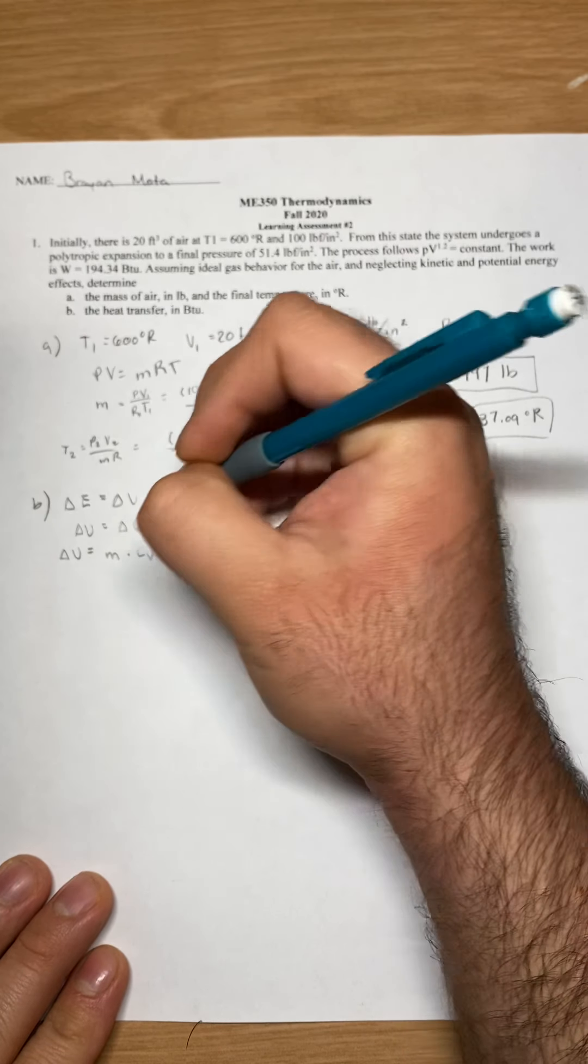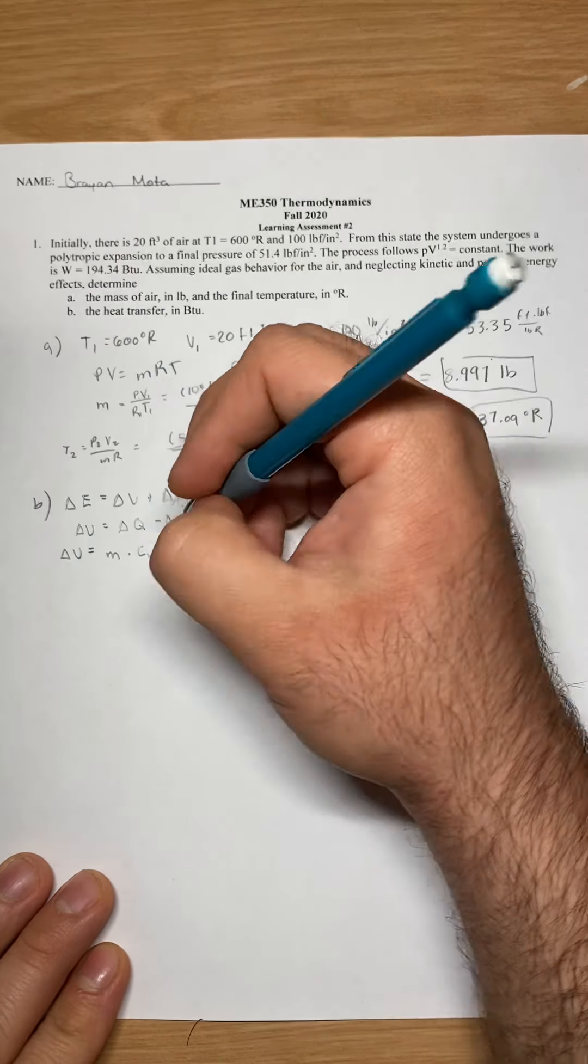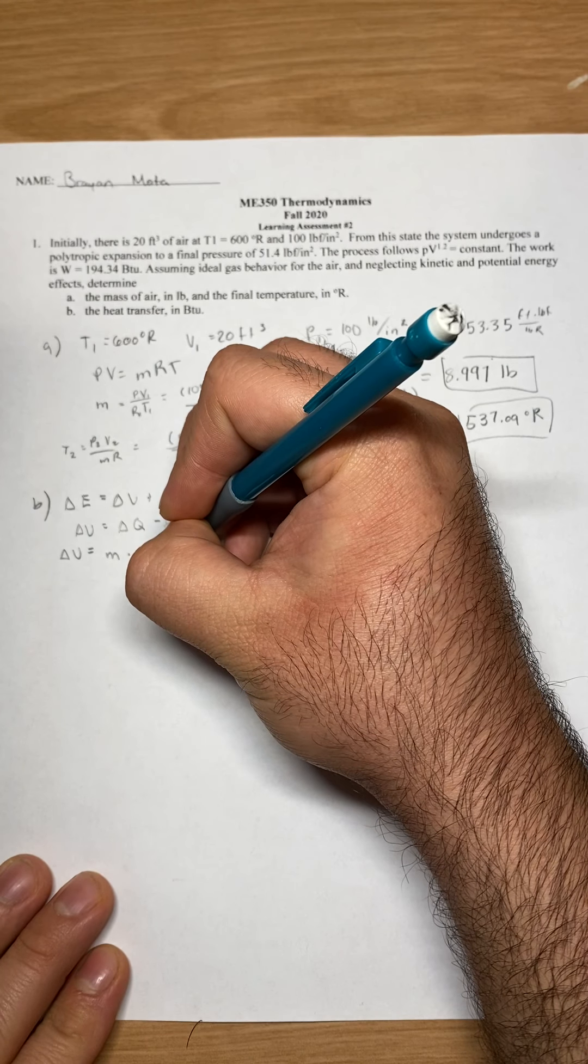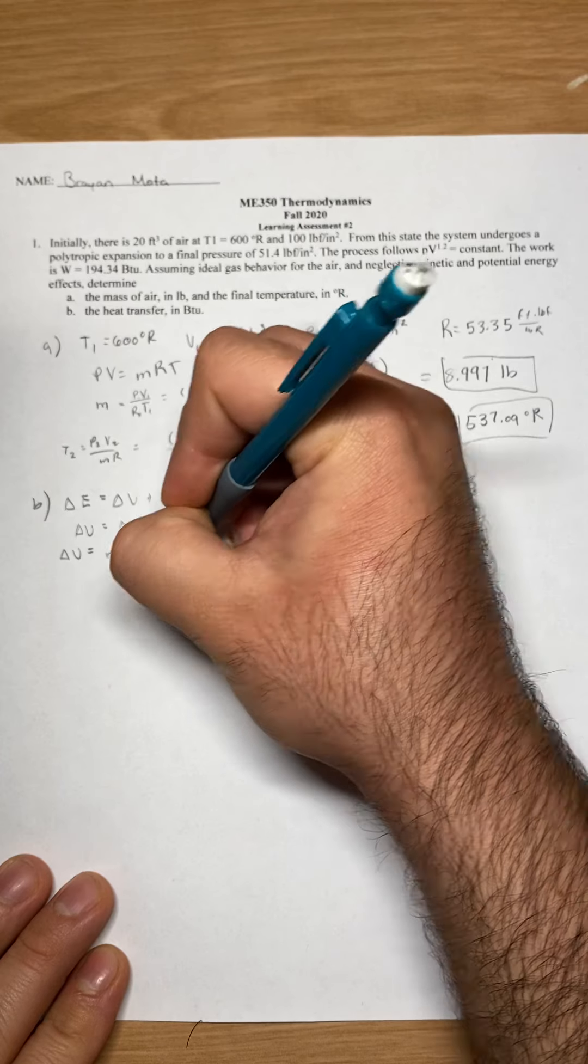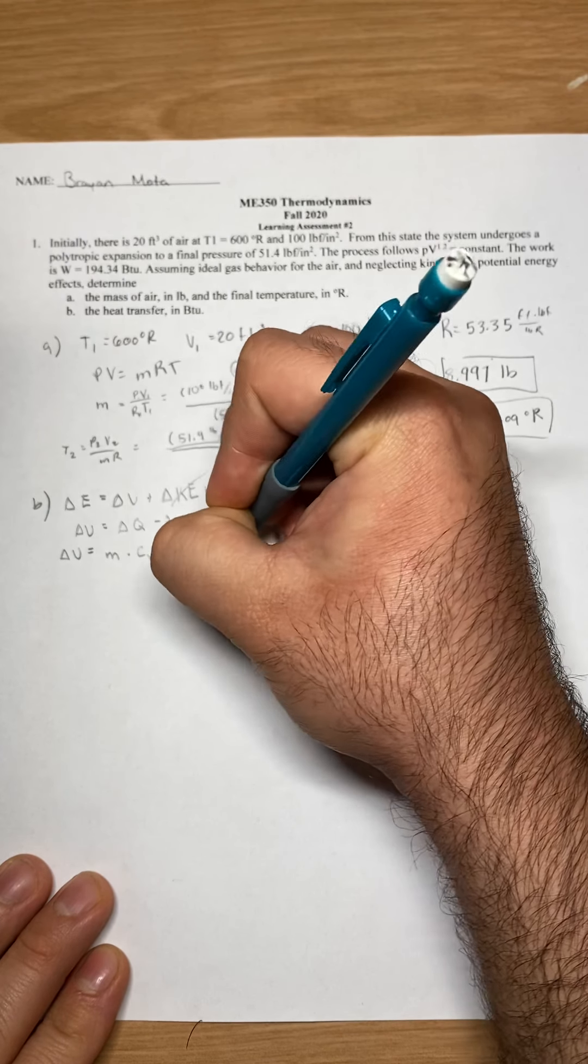For our delta U, we know that this equation is our heat minus our work. Our work is given and it is 194.34 BTU.